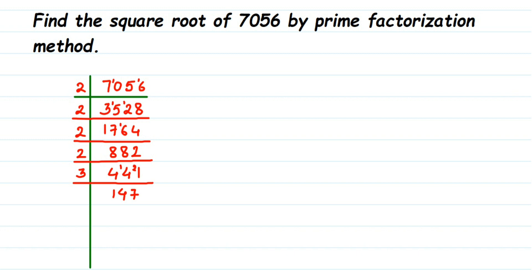We divide 147 by 3 again: 3 × 4 = 12, remainder 2, making 27; 3 × 9 = 27. We get 49. Since 49 is a perfect square of 7, we divide by 7: 7 × 7 = 49. Then 7 × 1 = 7, giving us a quotient of 7.